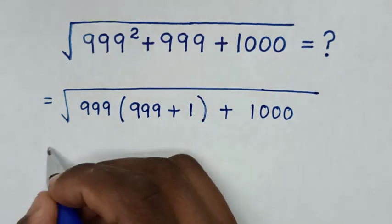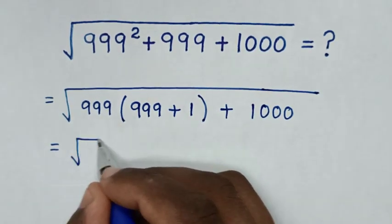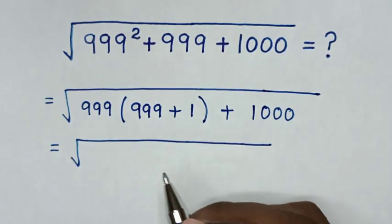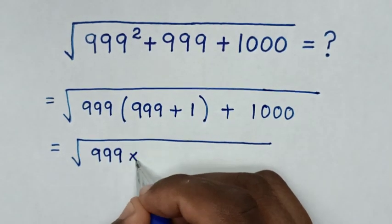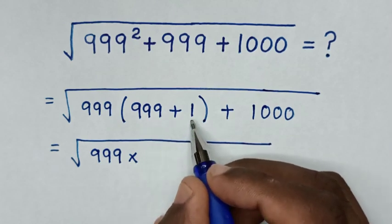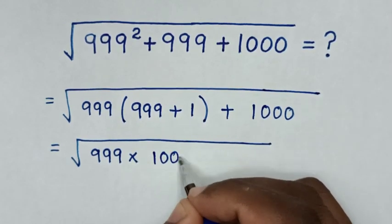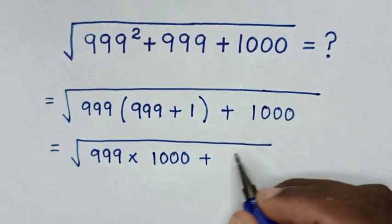Then in next step it will be equal to square root of this 999 times 999 plus 1 is 1000, then plus this 1000.